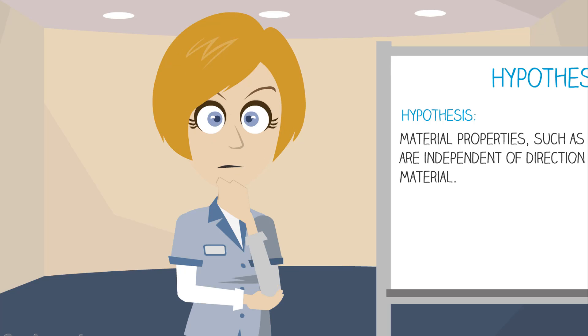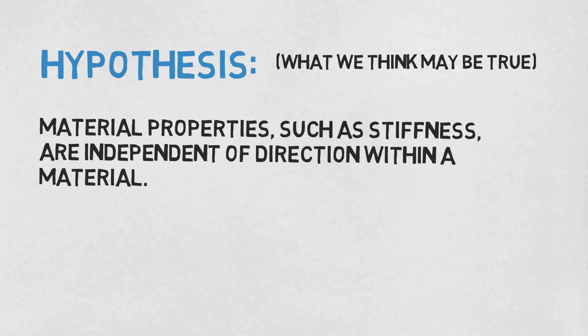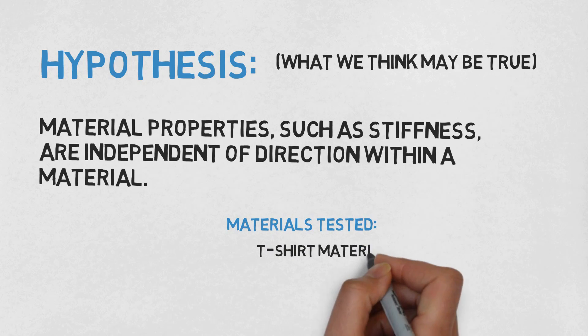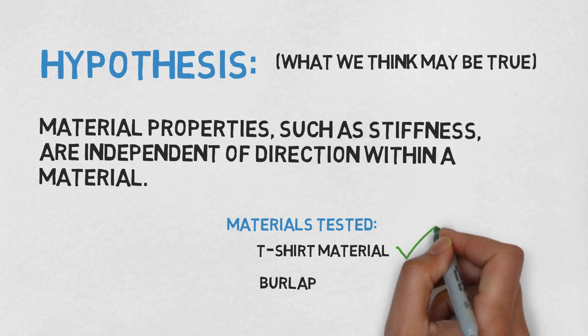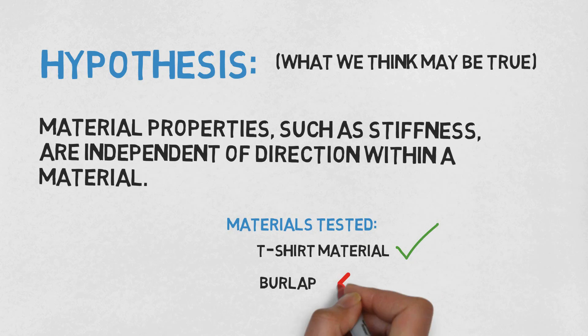So what can we conclude from our experiment? At first, we made the hypothesis that material properties are independent of direction within a material. But in our experiment, we found that although this is true for some materials, like the t-shirt material, it is certainly not true for all materials. Our hypothesis is thus proved wrong, at least for some of the time.